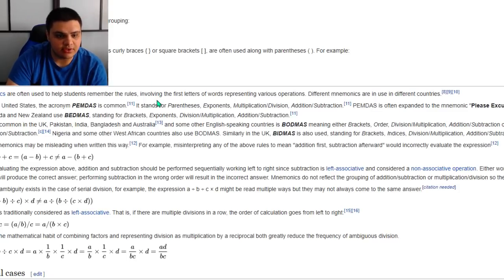It also says this on Wikipedia under mnemonics, and it explains PEMDAS. And it says these mnemonics can be maybe misleading when written this way. For example, misinterpreting any of the above rules to mean addition first subtraction afterward would incorrectly evaluate the expression. So that is where the confusion appears to be coming in.